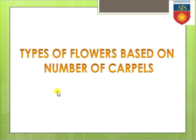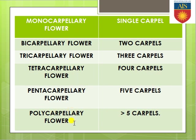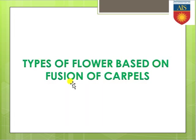Based on the number of carpels: if a single carpel is present, that flower is monocarpillary; bicarpillary means two carpels; tricarpillary means three carpels; tetracarpillary means four carpels; pentacarpillary means five carpels; and polycarpillary means more than five carpels. Based on the number of carpels, flowers are differentiated into these six categories.